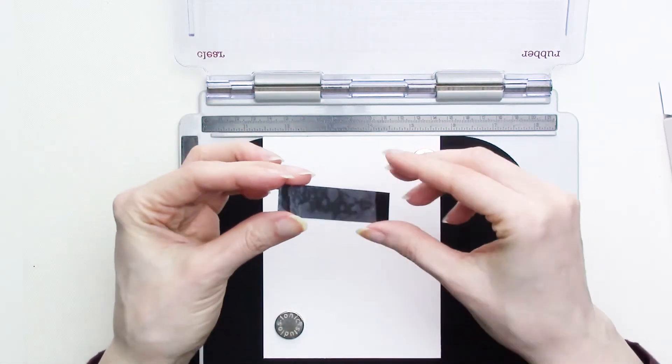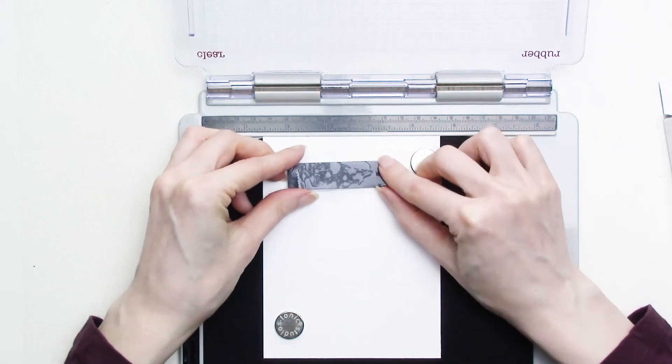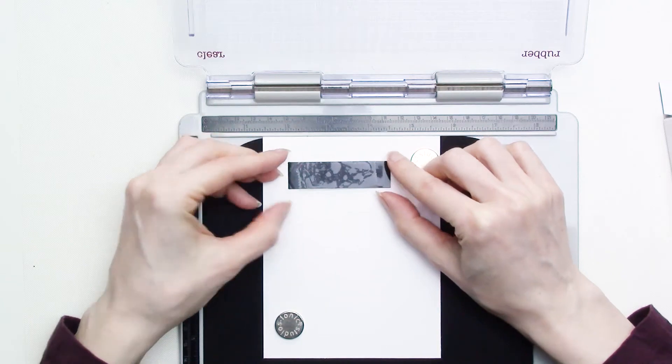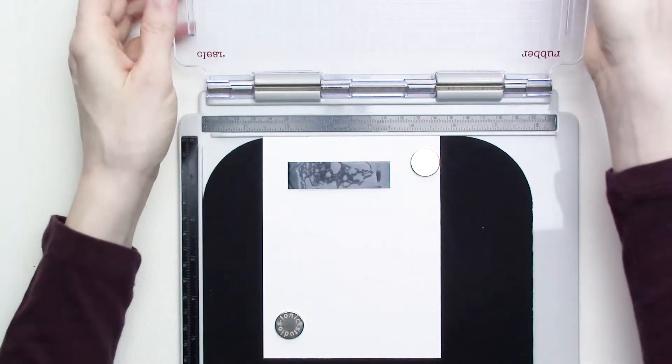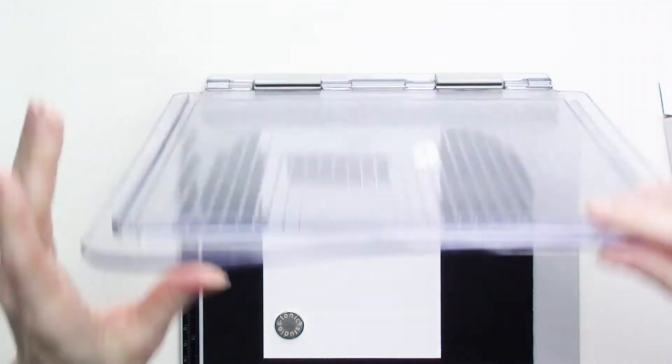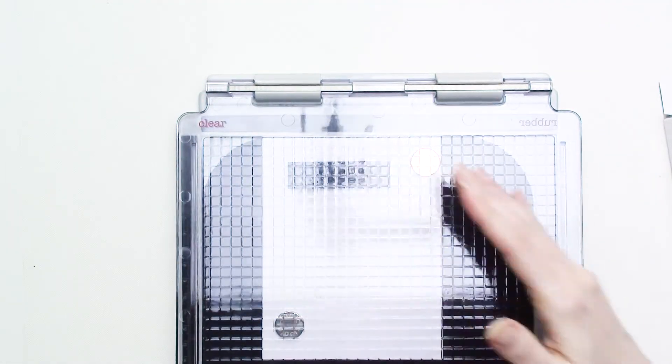After this, I'll take the stamp that I added the removable double-sided tape to earlier, and I'll place it taped-side up onto the cardstock where I want to stamp it. I have to be careful here because this stamp has already been inked, but if you're using an un-inked stamp, you won't have to worry about accidentally pressing it down onto the cardstock.